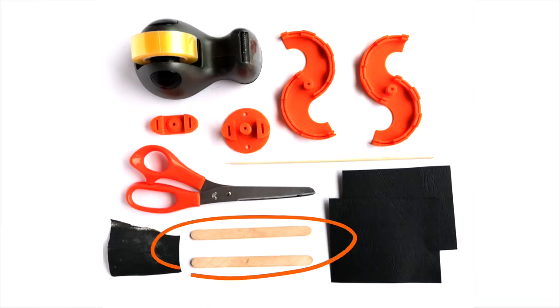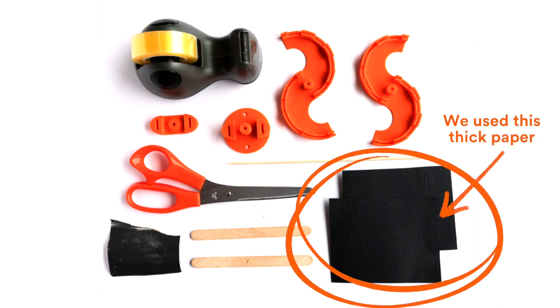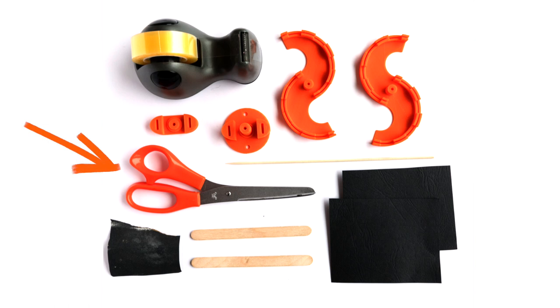You will need two ice cream sticks, one kebab stick, one piece of flexible material like a milk container, yogurt container or cardboard, some scissors, some sanding paper, and most importantly you'll need four 3D printed items.